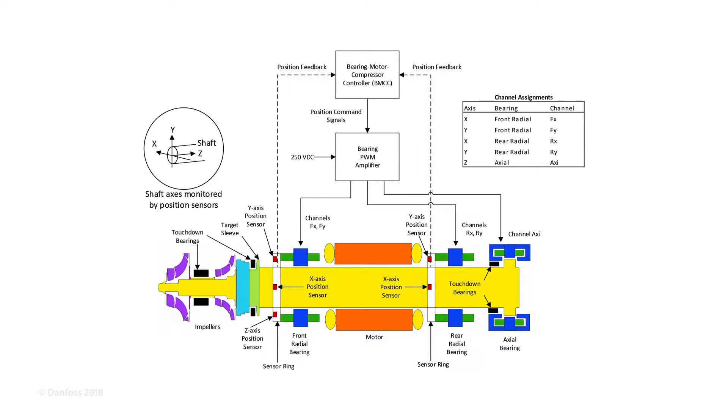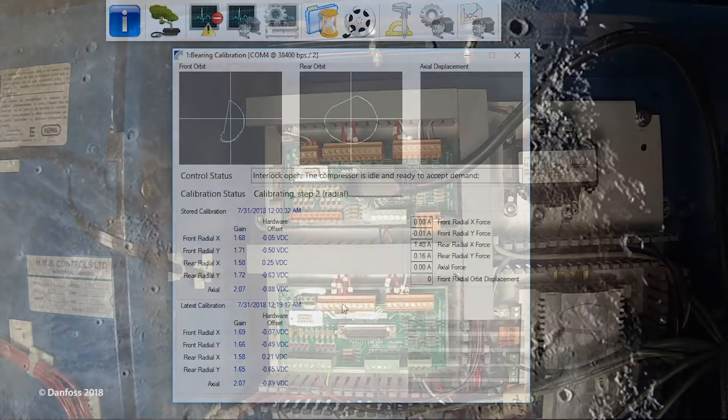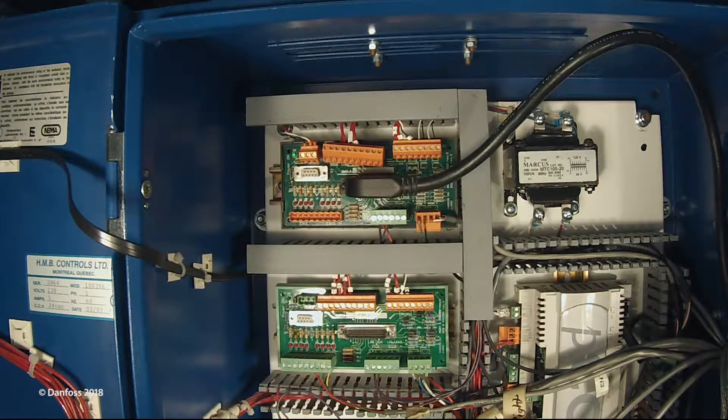When the compressor calibration is unusual or bearing faults are occurring, it is recommended to verify the PWM. Begin by disconnecting the compressor interlock and chiller controller connections from the IO board to prevent interference from external sources during testing.